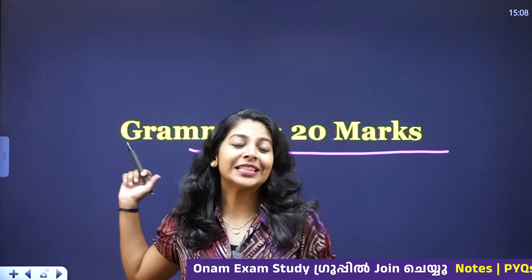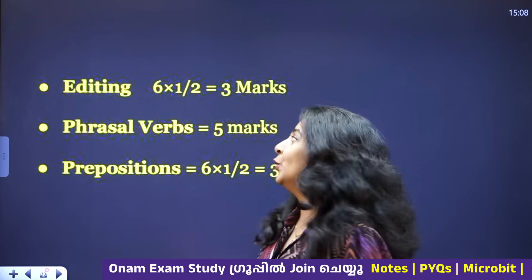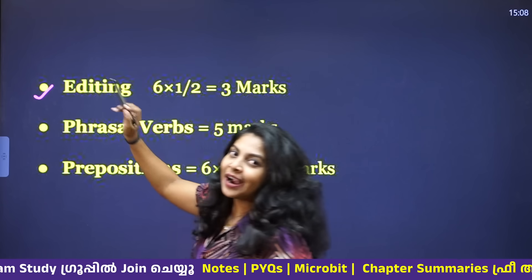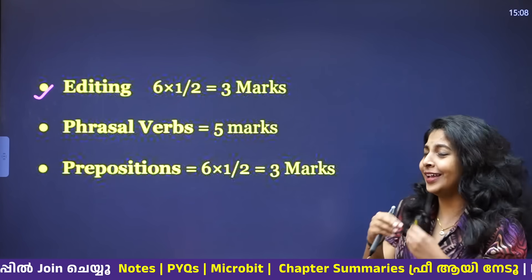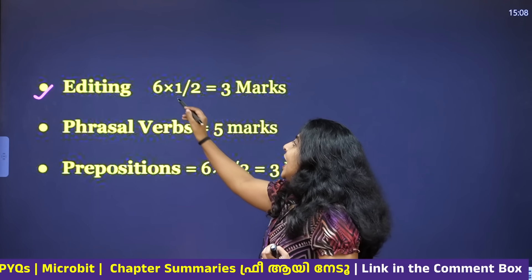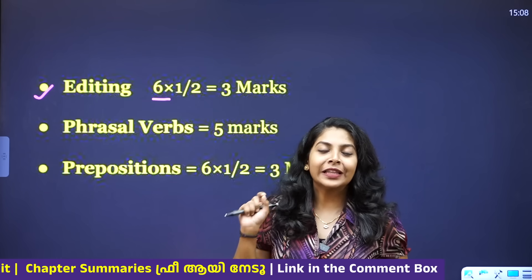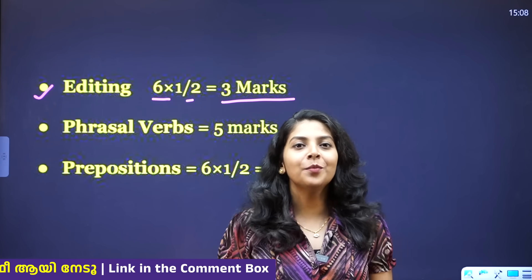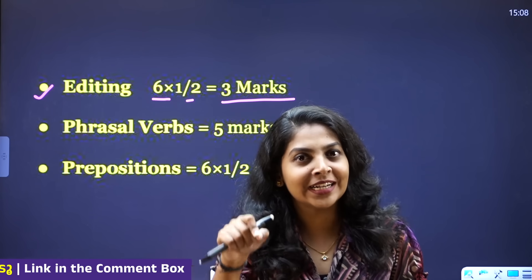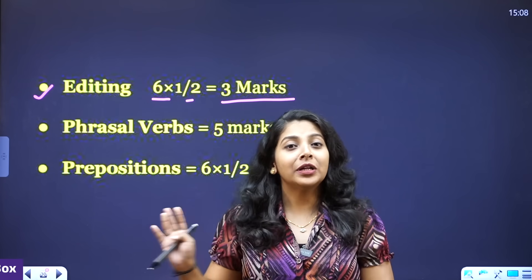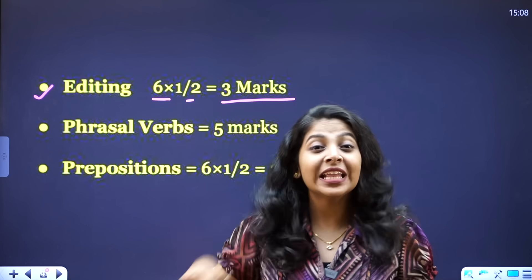If you have a 25-mark section, you will have 25 marks. If you have 27 marks, you will have a 20-mark section. If you edit 6 dashes, you can fill it in for 3 marks. If you edit 4 or 5 marks, you can fill it in for 3 marks.